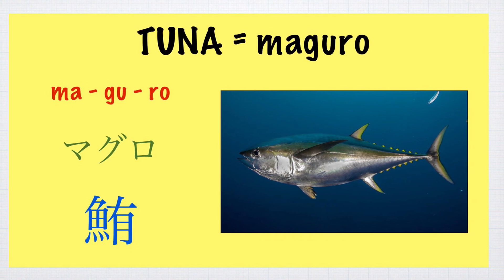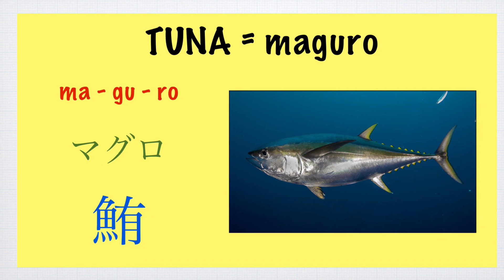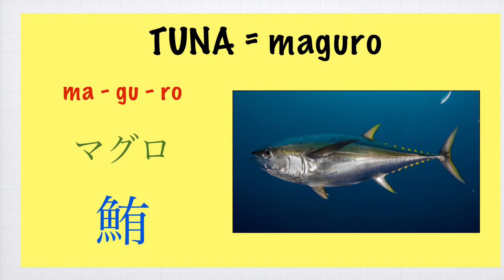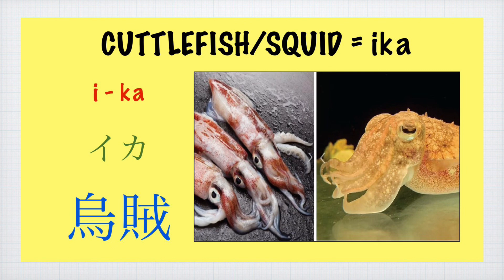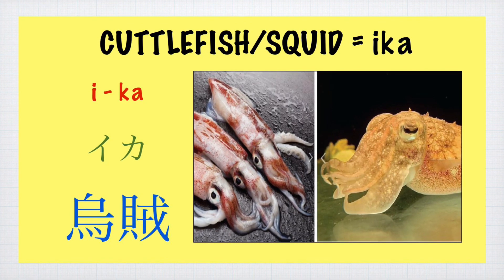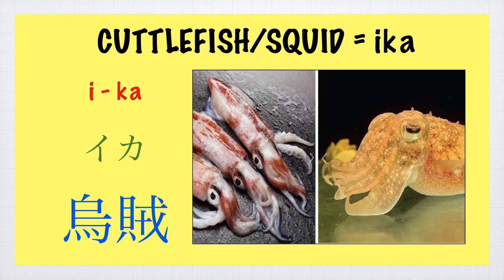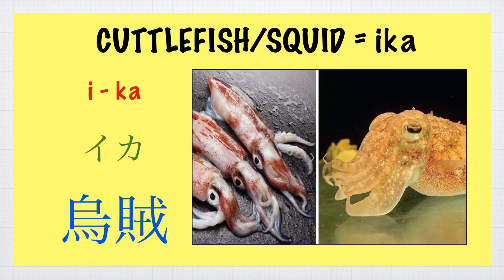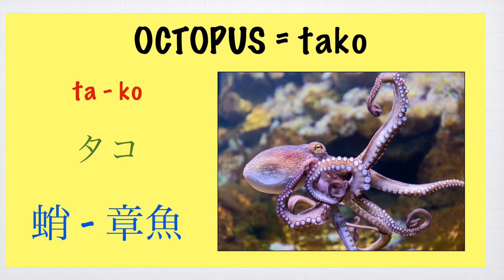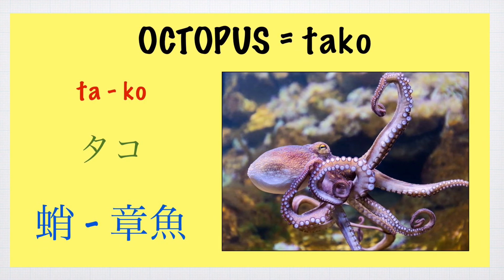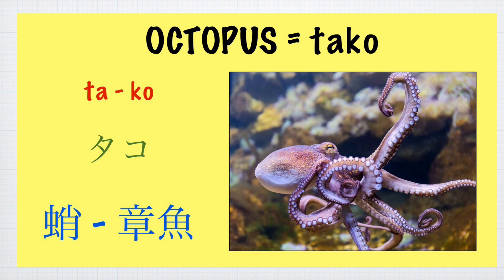Tuna — Maguro. Maguro. Cuttlefish or Squid — Ika. Ika. Octopus — Taco. Taco.